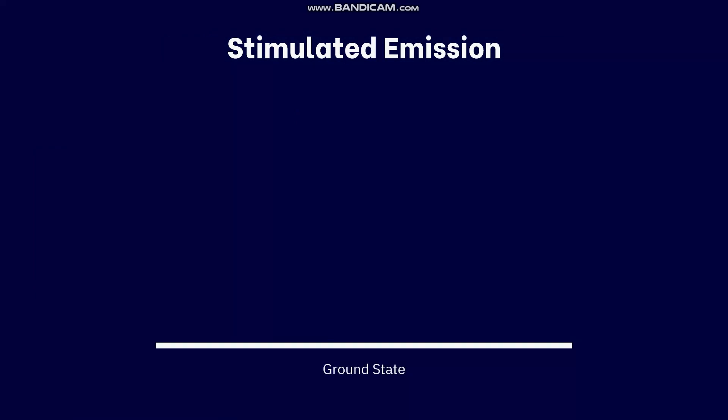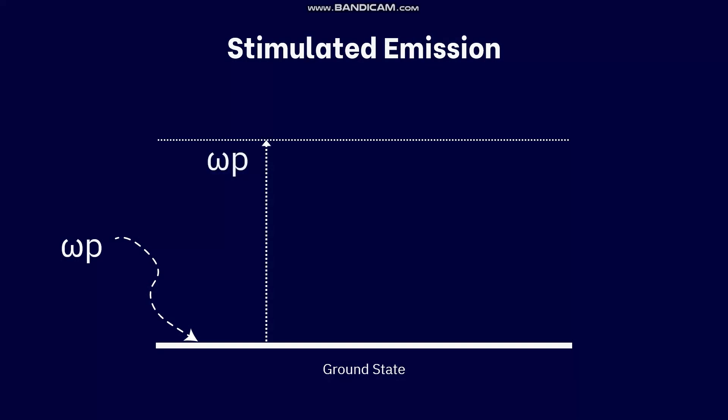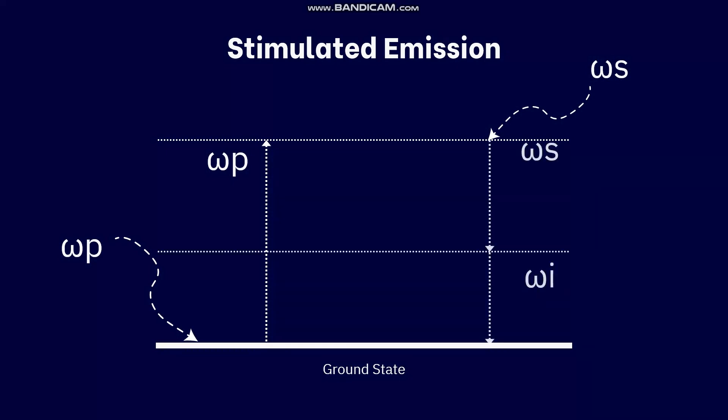This happens due to stimulated emission, where a ground state material, when hit with omega_p, absorbs the energy and rises to an energy level equal to omega_p. At this energy level, if a wave omega_s present in the system is incident on omega_p, omega_p splits into omega_s and omega_i.